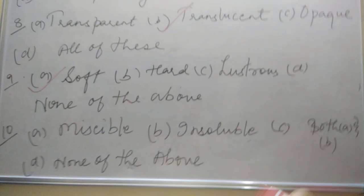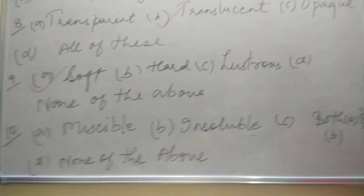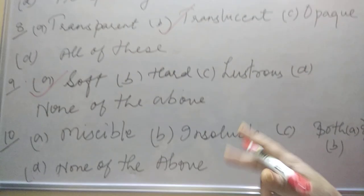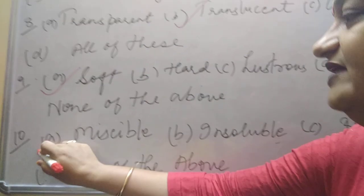And the last question, children, oil is immiscible, correct, in water, then vinegar will be, you have to use the word immiscible, then the word should be miscible. You cannot use the word soluble over here.